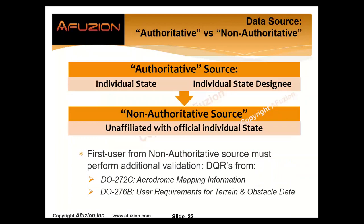Data is the differentiator — it's growing exponentially in aviation. We have authoritative sources and non-authoritative sources. An authoritative source is an individual state or a country — or a designee from a state, perhaps a military entity or a weather agency. Those are authoritative; you can trust them. Non-authoritative sources are not officially associated with an individual state. The first user from a non-authoritative source must perform additional validation — are the requirements correct, complete, feasible, unambiguous? Then verification: have you met the requirements?